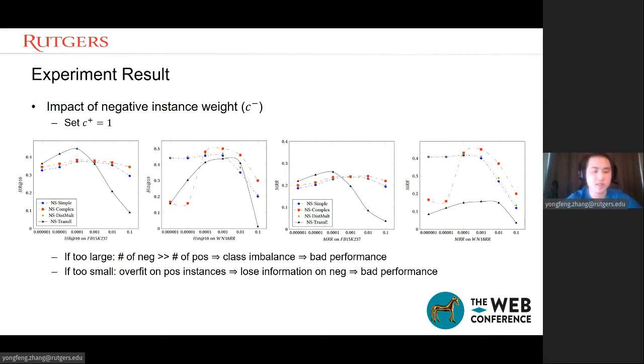From the figures, we can see that C negative has high influence on our performance. If C negative is set too large, we know that the negative instances are much more than the positive instances. So if C negative is too large, it may have class imbalance problem, which may hurt the performance. And if C negative is too small, our models will overfit on positive instances and lose the information on negative instances, which may also hurt the performance. As you can see, the conclusion is consistent with the number of negative samples in negative sampling-based methods.